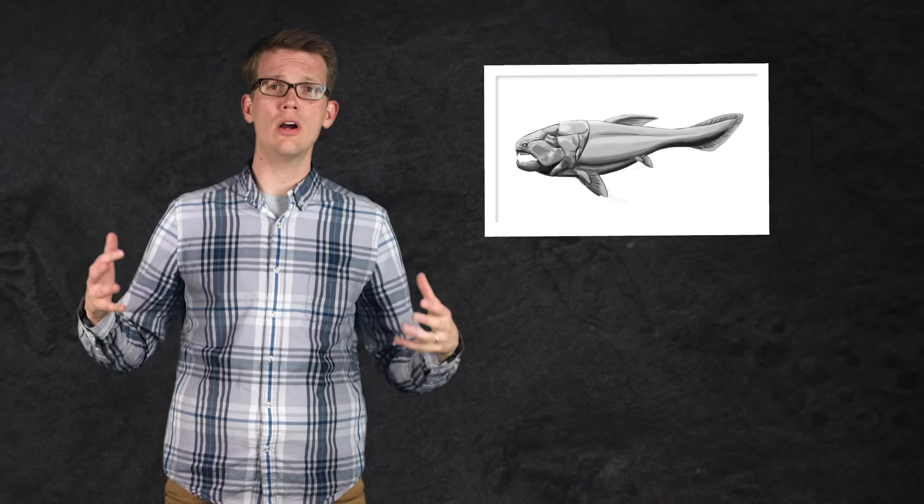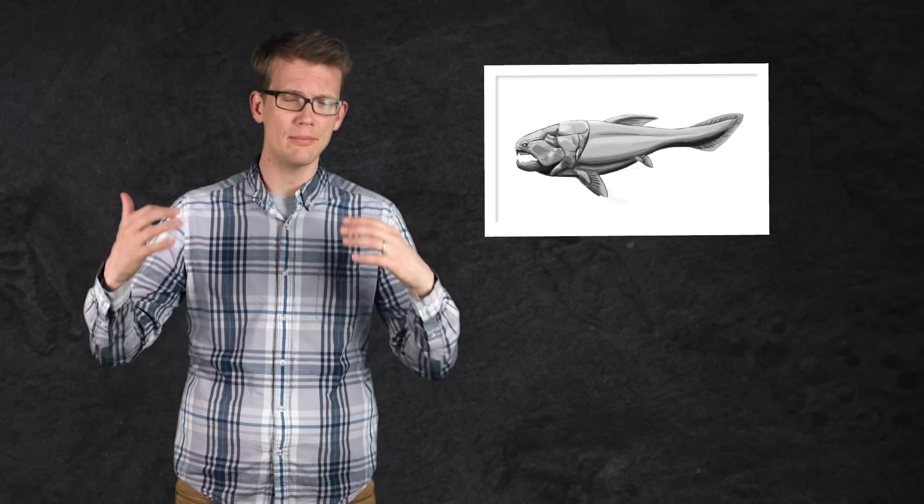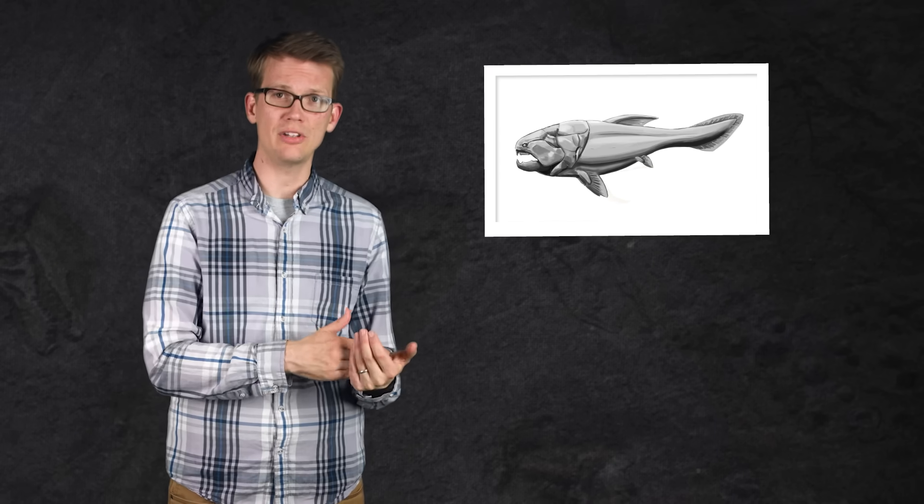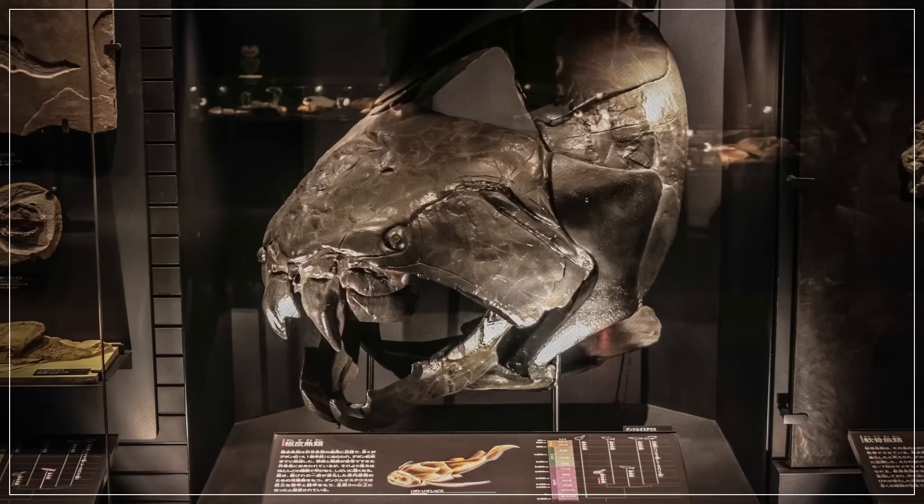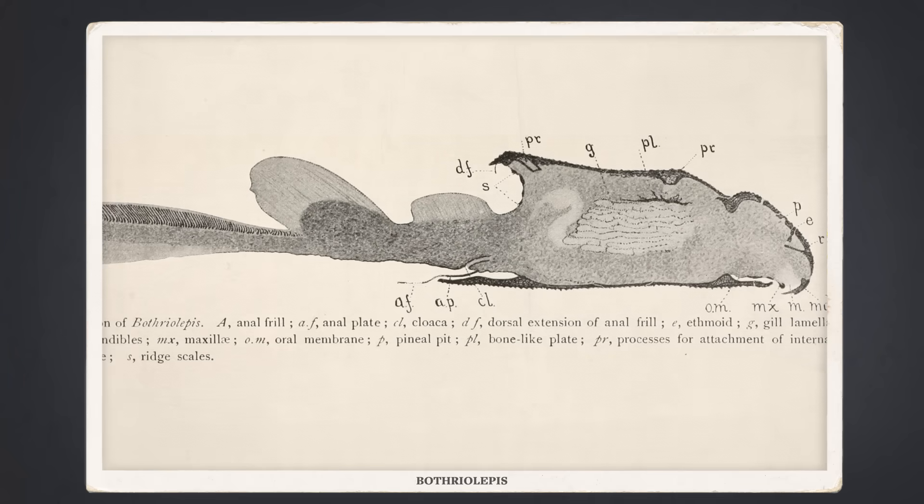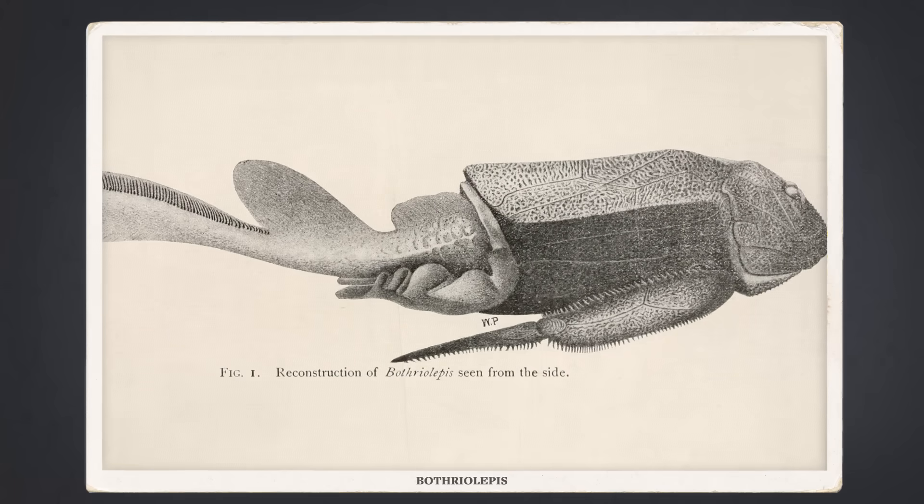But placoderms were also unique among armored fish in having a complete mineralized internal skeleton, meaning they had both an endoskeleton, like you do, as well as an exoskeleton. And their endoskeleton and exoskeleton were completely separate. For example, the skull of a placoderm had an internal brain case made of endoskeletal bone. Then, as an additional layer outside of that, unconnected, was a thick layer of exoskeletal bone.